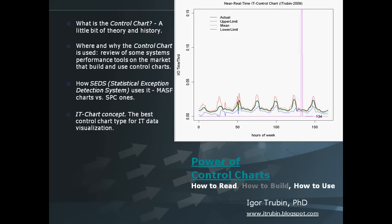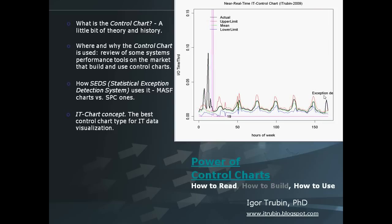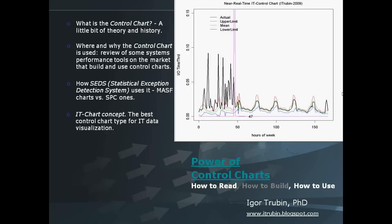A useful tool to visualize computer system behavior is the control chart. Originally used in mechanical engineering, it has become one of the main Six Sigma tools to optimize business processes. After some adjustments, it is now used in the IT capacity management area, especially in behavioral learning products.